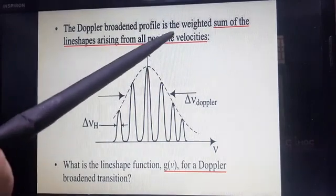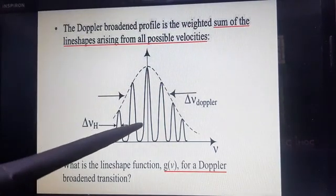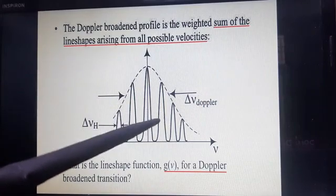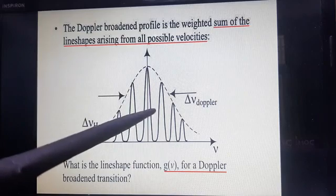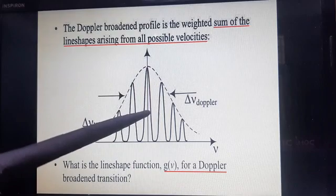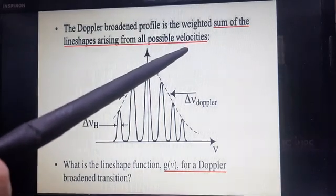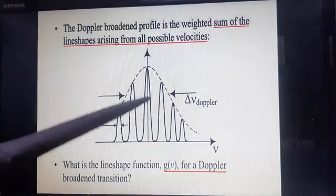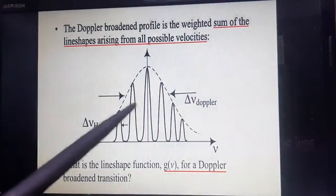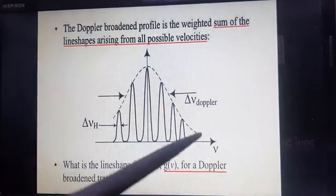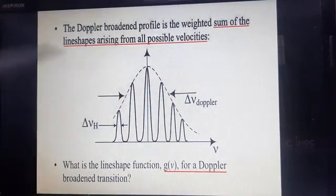It is the sum of line shapes arising from all possible velocities, because all atoms or molecules are not moving with the same velocity — some move at high speed and some at low speed. With different velocities, different line shapes are observed. It is the mixture or sum of all line shapes observed at different velocities.